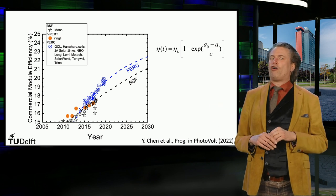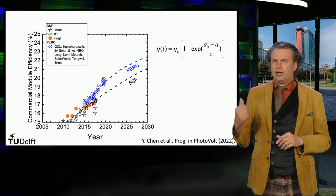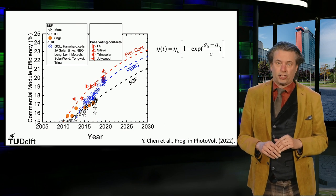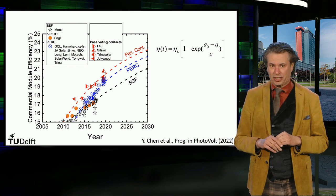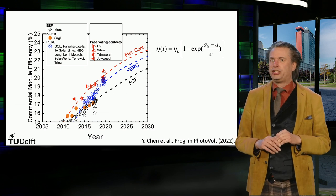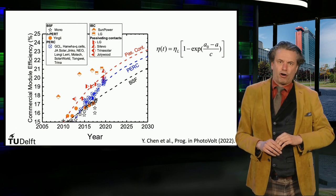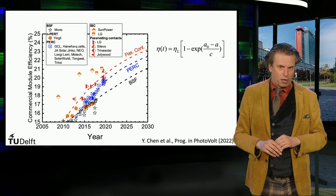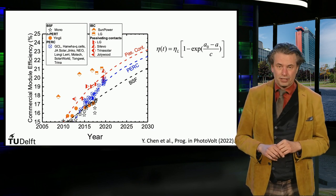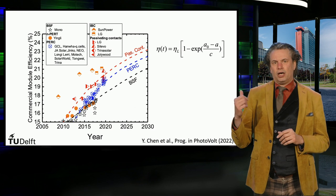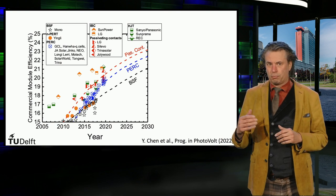Commercial module efficiencies of up to 20% in 2020 have been achieved for the PERC technology. The upcoming technology based on passivated contacts like the TOPCon has achieved conversion efficiencies for commercial modules up to 21% already in 2020. The data points here are from modules from LG, Silevo, Trina Solar, and Jolywood. The orange dot represents efficiencies of the commercial IBC-based modules of SunPower and LG — module efficiencies of slightly above 21% were already on the market in 2020. The green dots represent the heterojunction crystalline silicon PV technology, with data from companies like Sanyo, Panasonic, SunPrime, and REC.